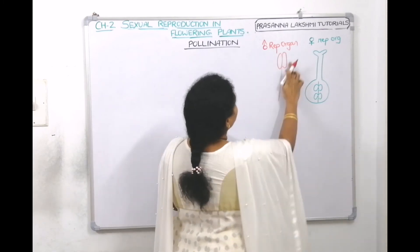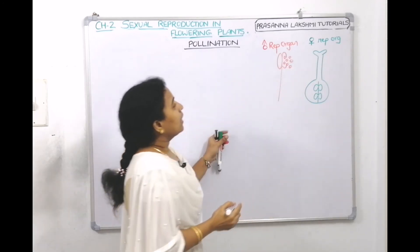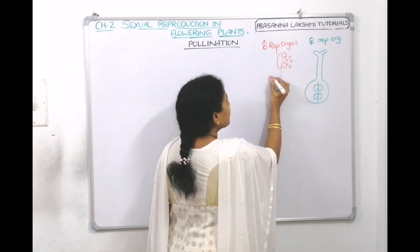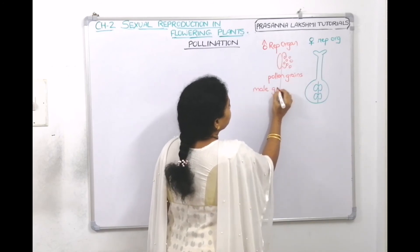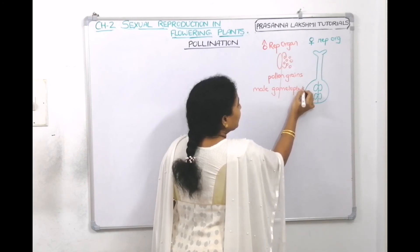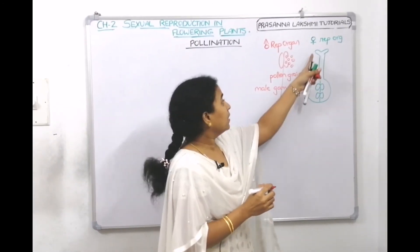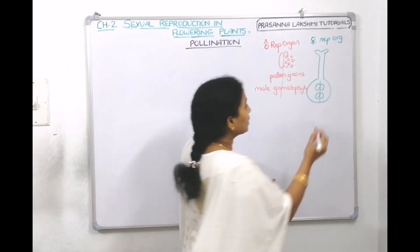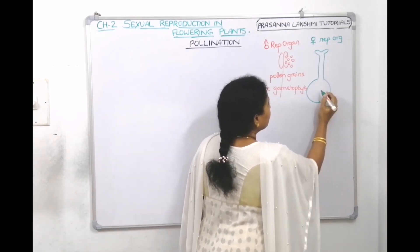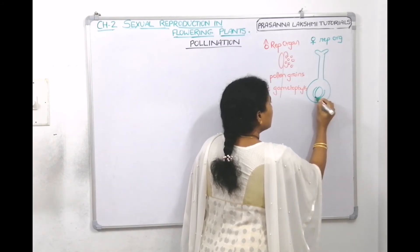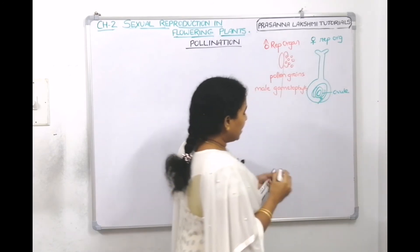The stamen contains pollen grains. We can see these pollen grains coming out when the anther splits. The pollen grains are called male gametophytes — they contain male gametes. The female reproductive organ, the pistil or carpel, has a stigma, style, and ovary. Inside the ovary is the ovule, which contains the embryo sac.